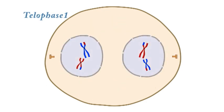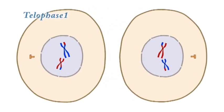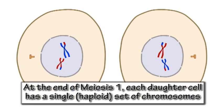Telophase 1 and cytokinesis follow, producing two daughter cells, each of which contains half the number of chromosomes of the original cell. As the original cell had a double or diploid set of chromosomes, the two daughter cells at the end of meiosis 1 each have a single or haploid set of chromosomes.